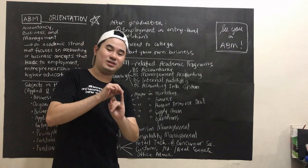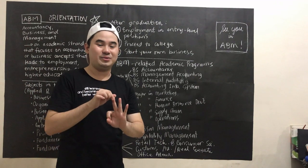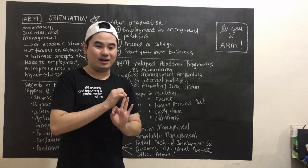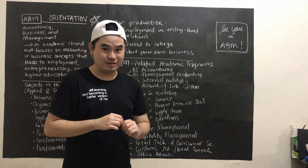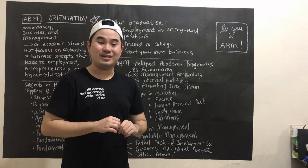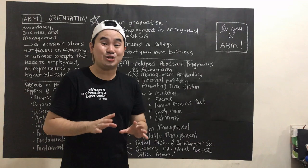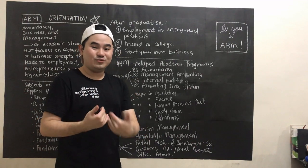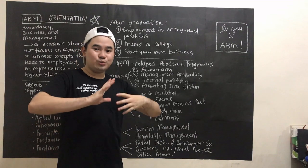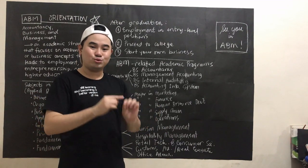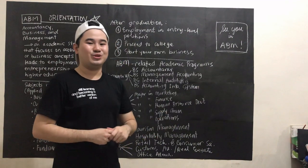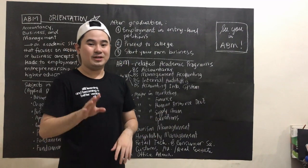Now, para saan yung tourism operations, cookery, RBO? Those are TVL — Technical, Vocational, Livelihood strands. Yun yung mga gustong mag-enter ng workforce after graduating from senior high school. So I highly suggest, if you want to enter BSTM or BSHM, then you should be entering the ABM strand.